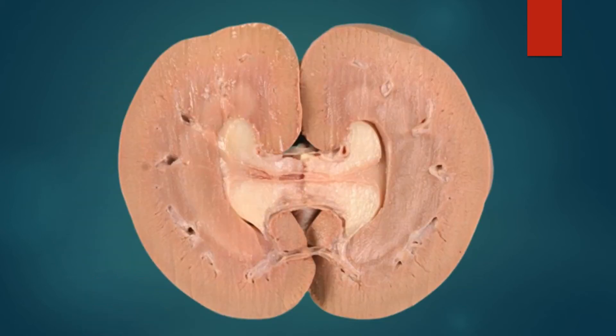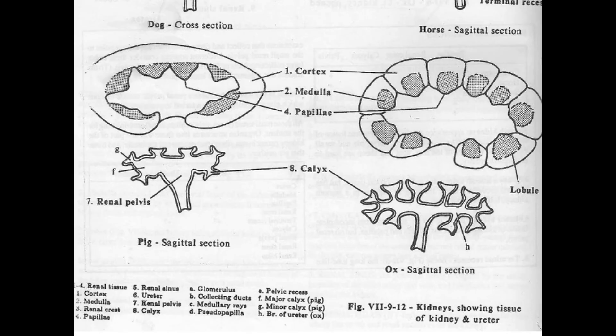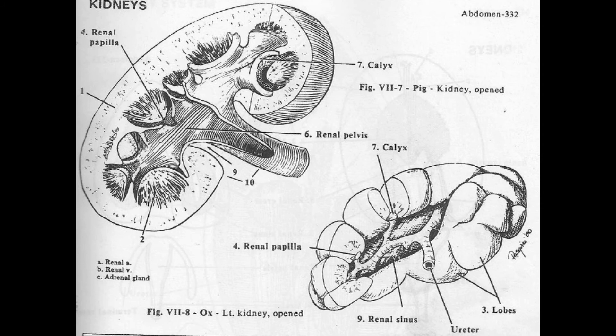After dissecting the kidney, the first thing we see is the renal cortex. It is the outer layer of the kidney characterized by its light color and granular appearance. Then comes the renal medulla, which is the inner layer characterized by striations. Then comes the renal papilla, which is the apex of the lobule that drips urine into the proximal end of the ureter. Individual papillae are found only in ox because of the incomplete fusion of medullary pyramids. In the case of ox, each lobule has its own renal pyramid and its own renal papilla.